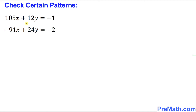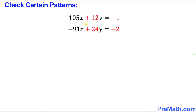So x equals 10 and y equals 0 is the solution to this given system of equations. Here is our next example, and we are going to spot some pattern in this system of equations. Here I have highlighted the numbers in red. You can see we have positive 12 and positive 24 as coefficients of y, and negative 1 and negative 2 on this side. Let's go ahead and cross multiply.